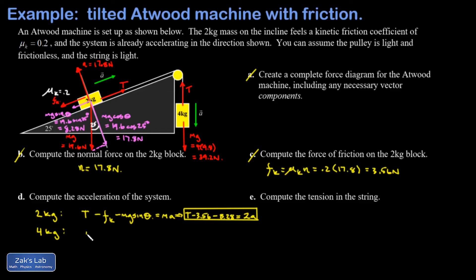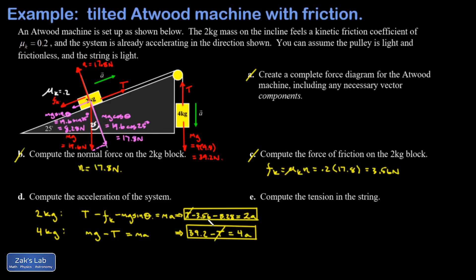For the four kilogram hanging mass: mg minus T = ma, so 39.2 minus T = 4a. We now have a system of two equations with two unknowns, T and a. Adding the equations eliminates T: 39.2 minus 3.56 minus 8.28 = 6a, giving 27.36 = 6a. Dividing: a = 4.56 meters per second squared.